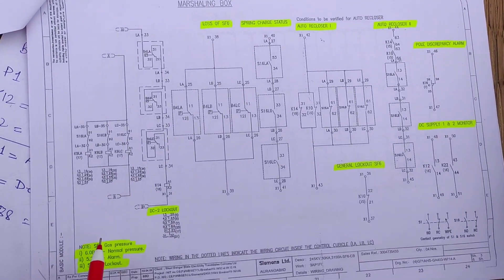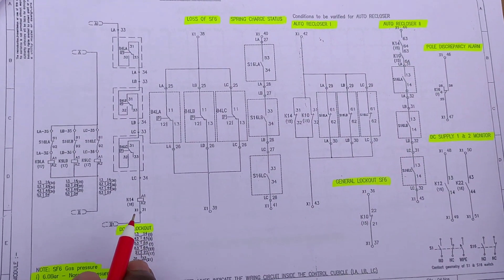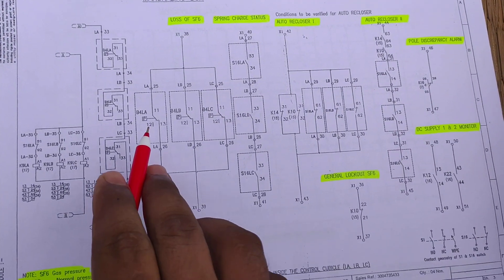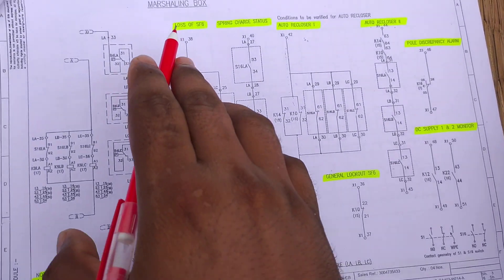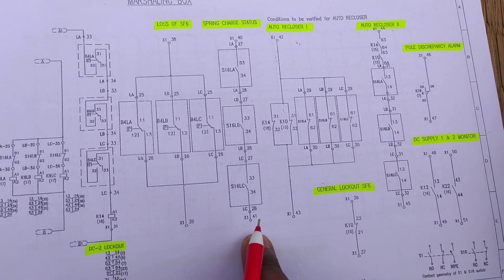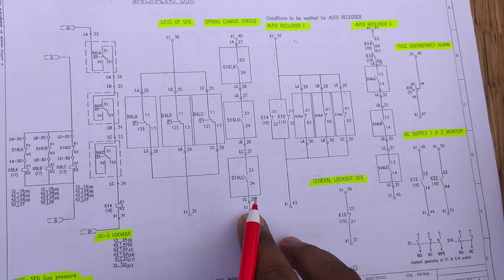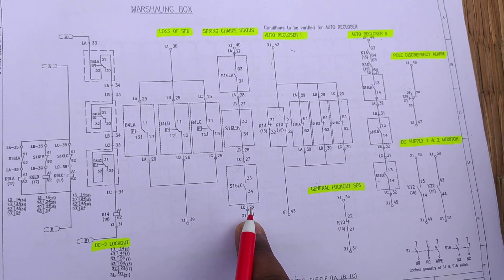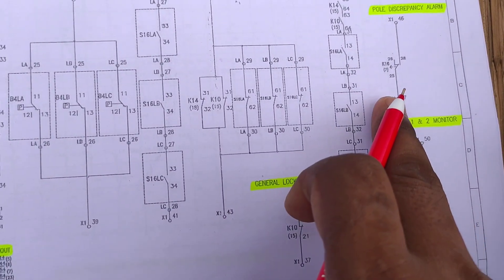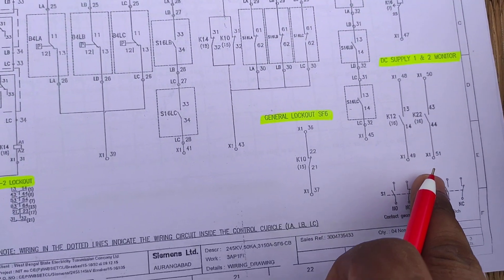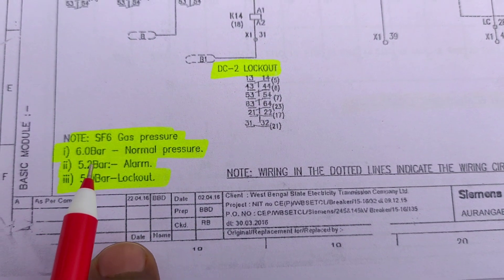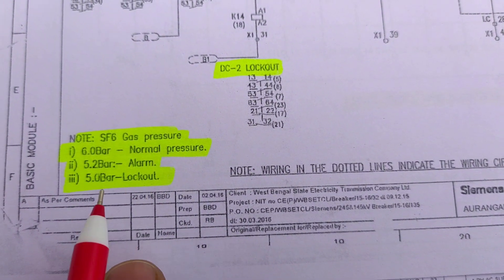This is the individual DC2 control circuit. Here K14 contactor is present, and here is the loss of SF6 indication. B4 is the counter — if all counter is okay, then the gas pressure is okay and the positions will be set accordingly. This is the spring charging indication; if all trip spring charging indications are charged then this will be NC and you can operate the circuit breaker. This is auto recloser 1 and auto recloser 2. This is the pole discrepancy. This is DC supply 1 and 2 monitoring. This is the general lockout. The normal pressure of the breaker is 6 bar, alarm is 5.2 bar, and lockout activates at 5 bar pressure.